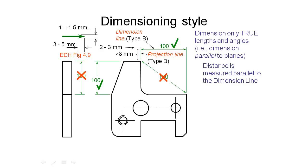Let's look at some other issues we may run into while dimensioning. Adding dimensions of 80 in two places, you'll notice there's potential ambiguity. One 80 dimension line is in line with some of the object's lines and could be confused for an edge, so we try to avoid putting dimension lines in line with existing object features. The other 80 overlaps our center lines for the holes, making it hard to read and potentially misread as a feature.